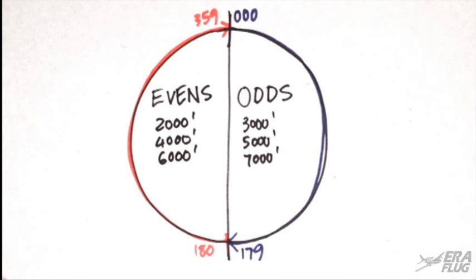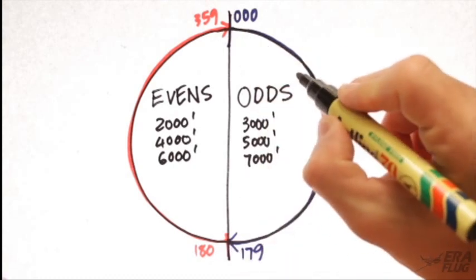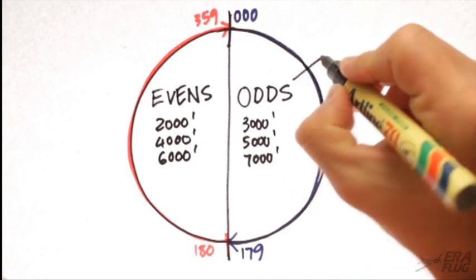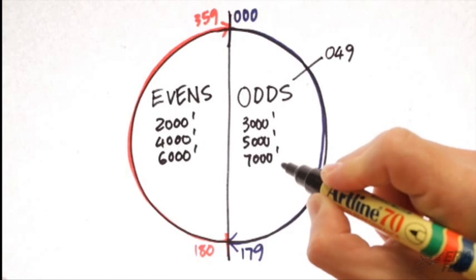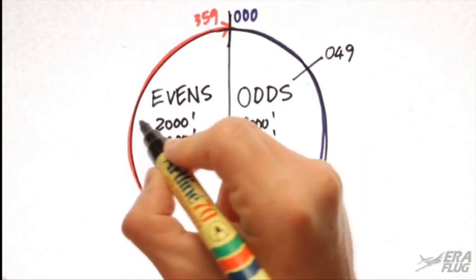If, for example, we have a magnetic track of 049, that will fall in the odd sector, and we would have an altitude of 3,000 feet, 5,000, 7,000, and so on.